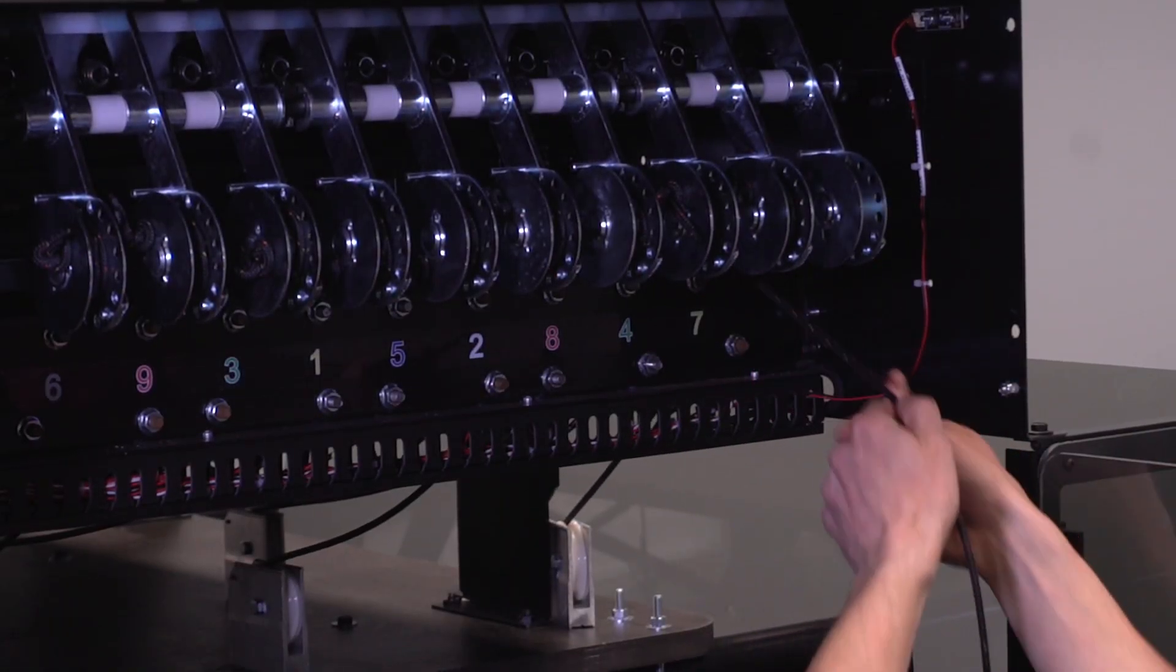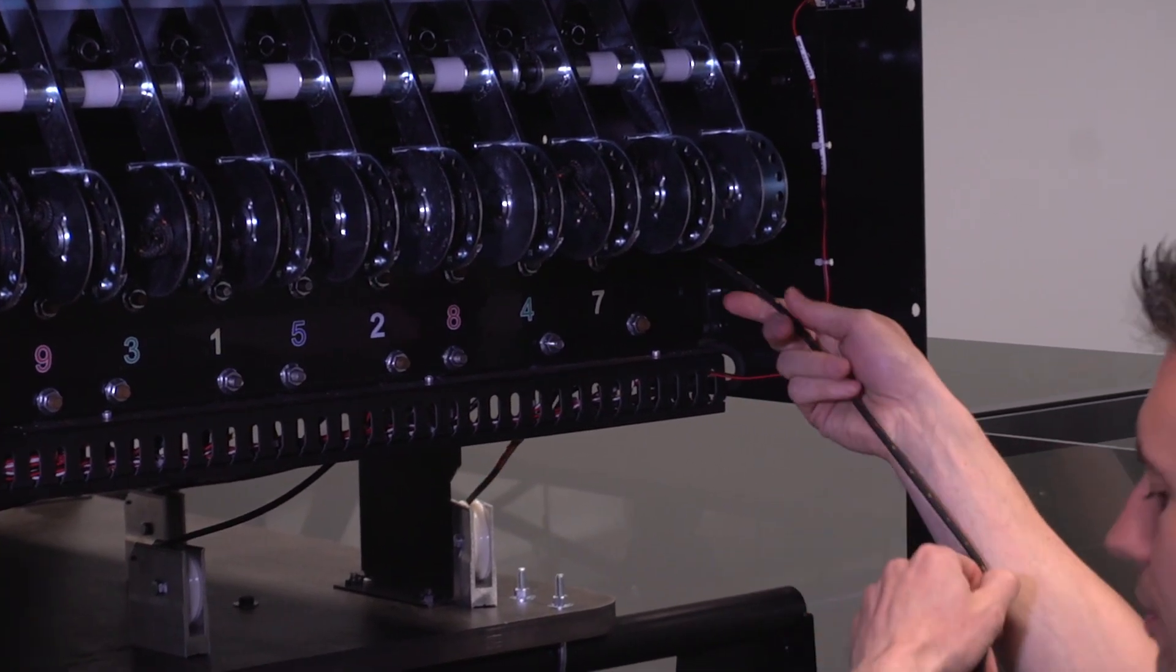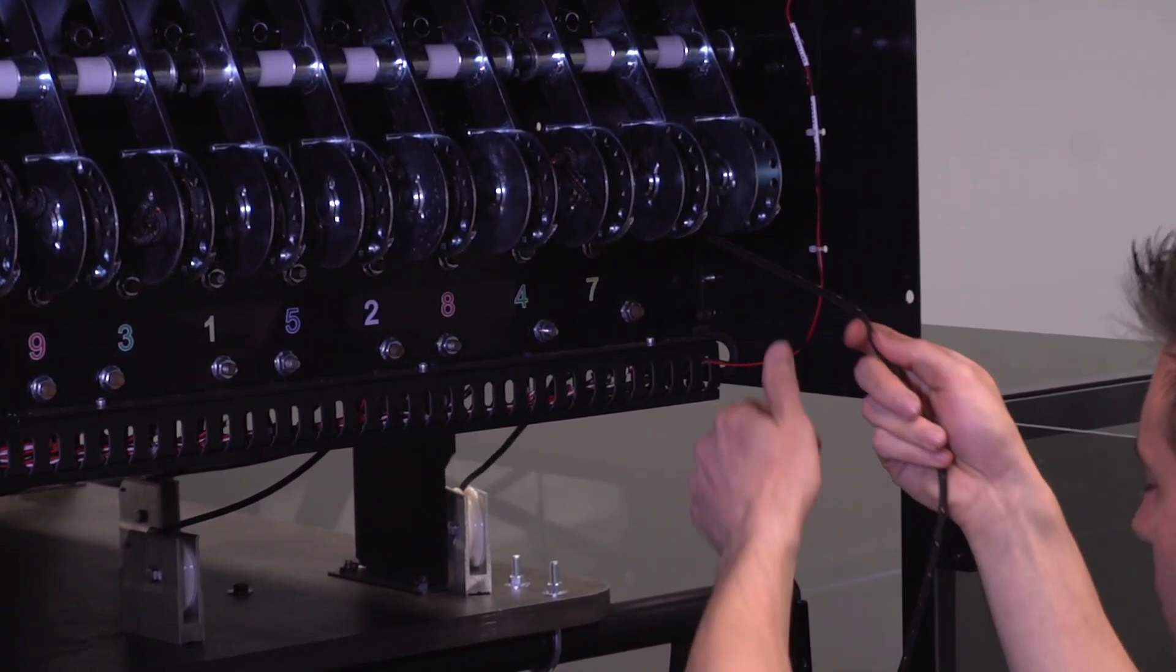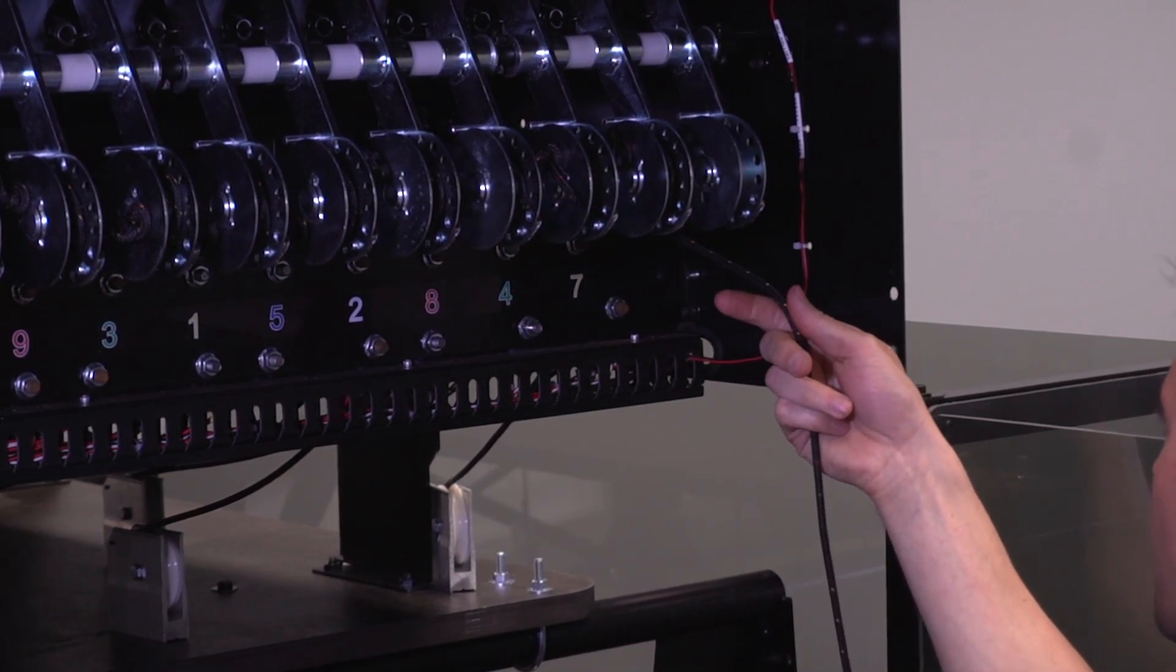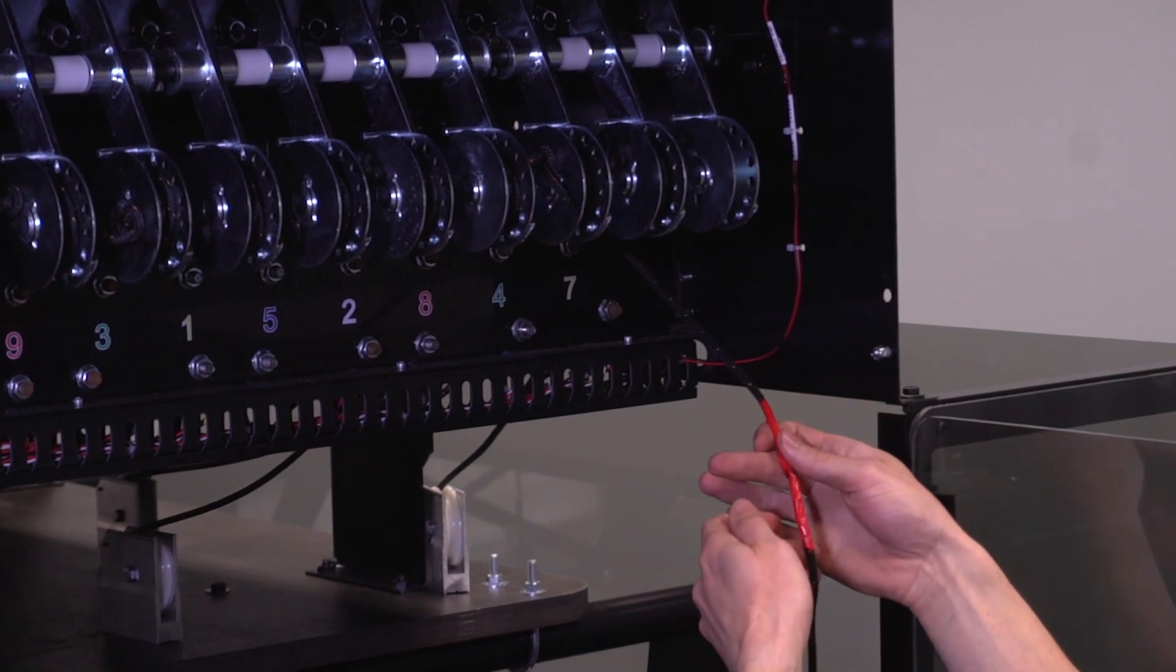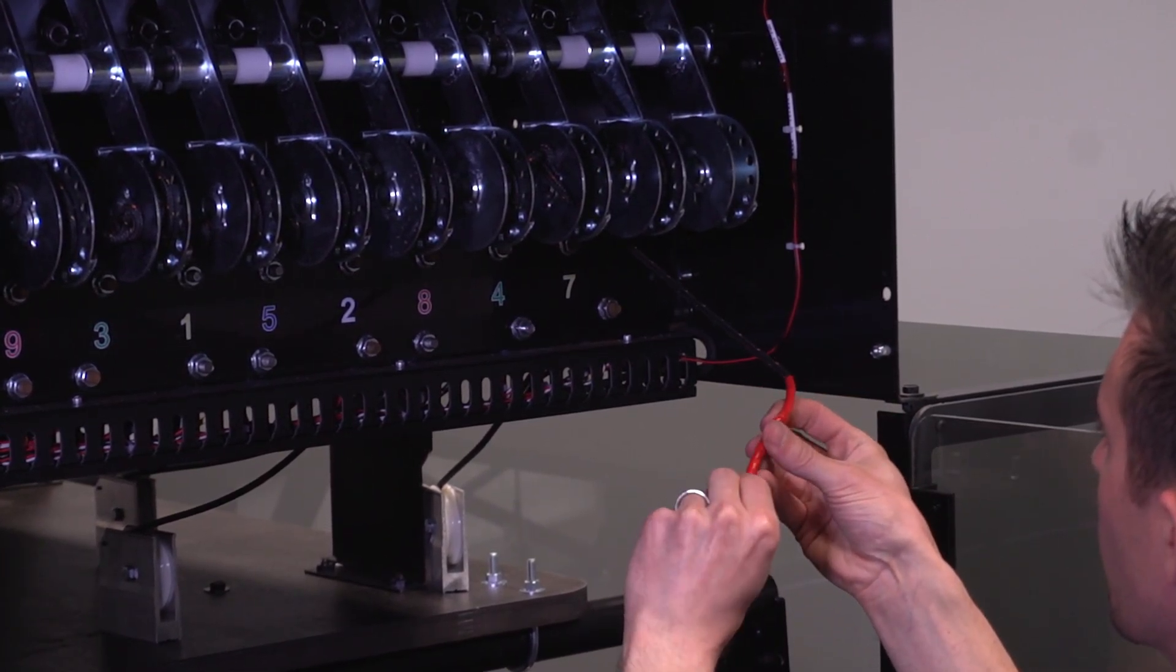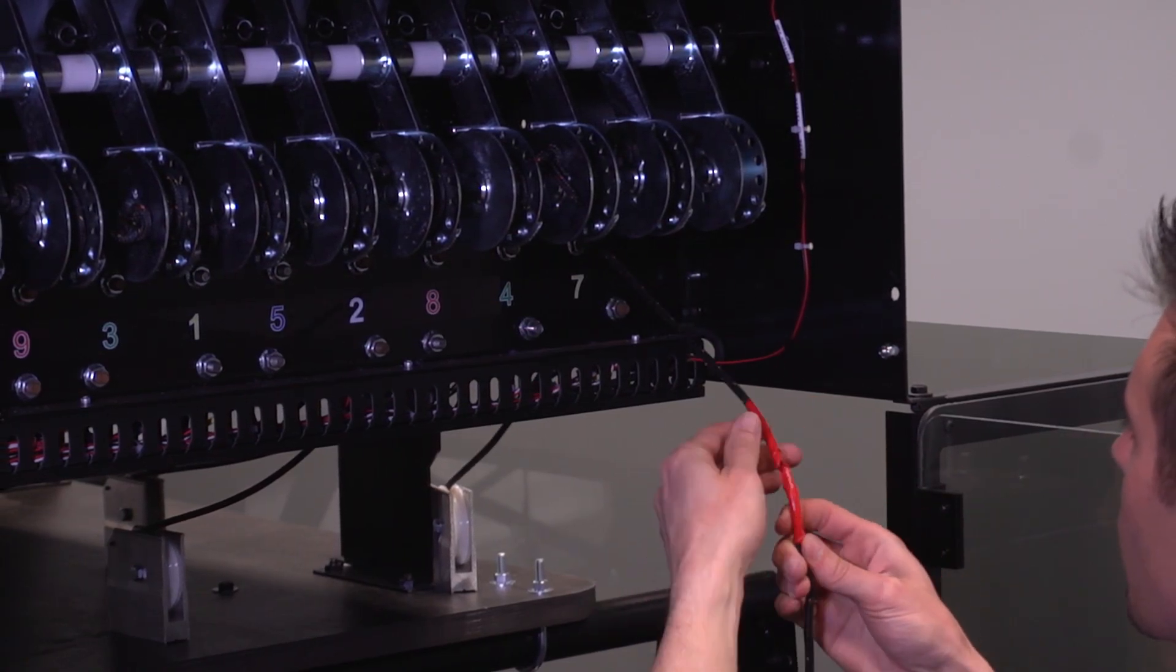Gently pull the old string to route the replacement string through the machine. Note, if you encounter resistance, stop and locate the snag. The replacement string may need to be routed through the machine by hand. Stop pulling when the taped connection is reached. Remove the taped connection and discard the old string.